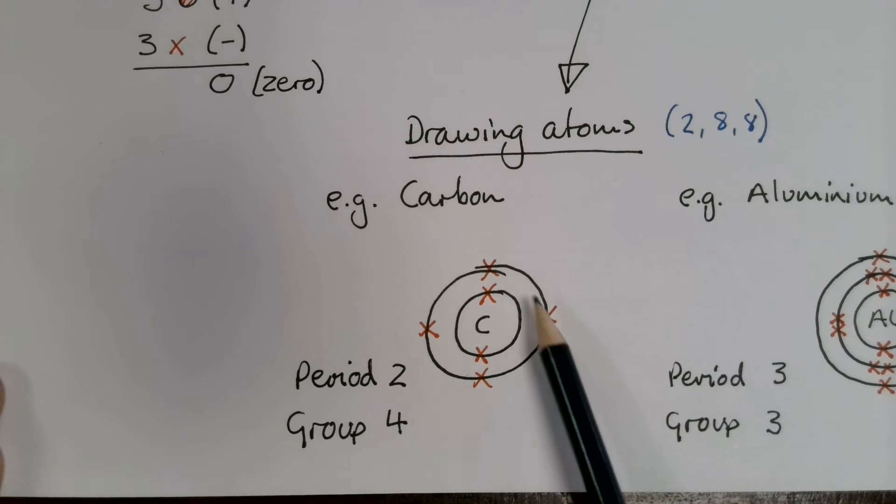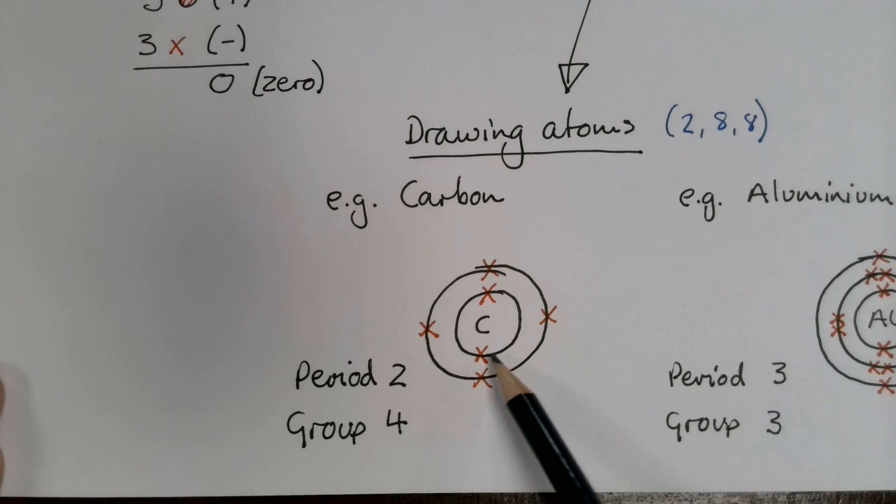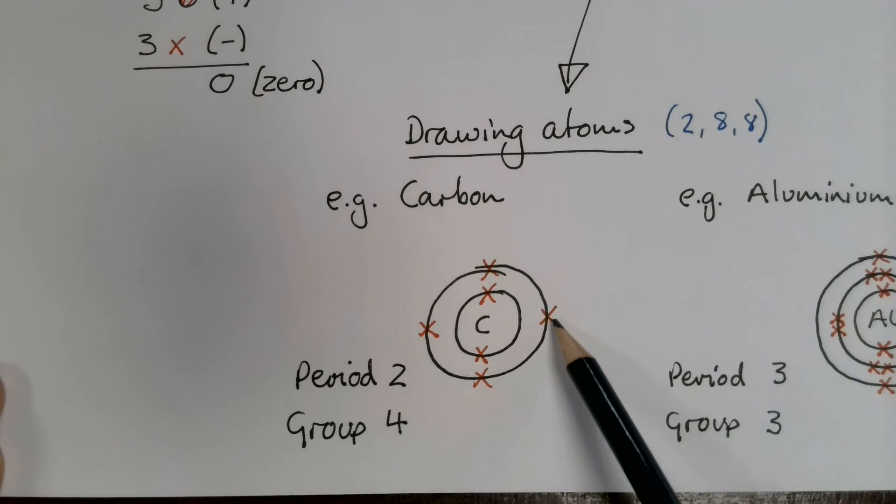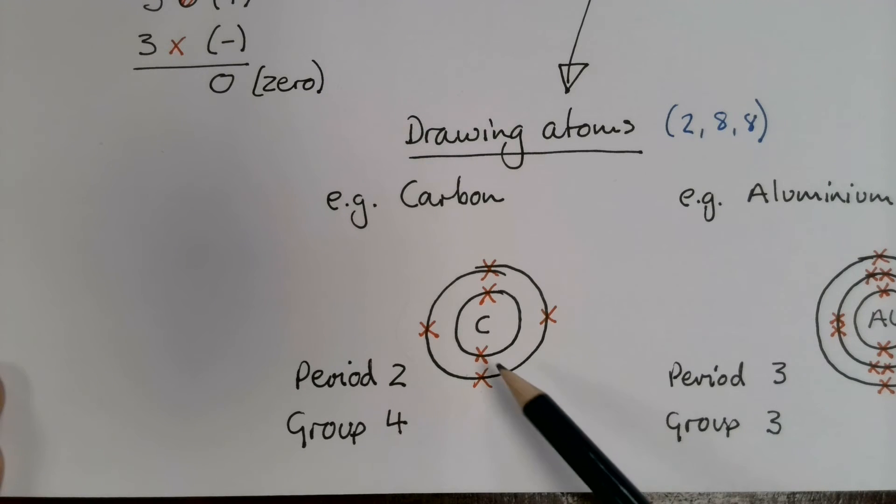And that tells me there are one, two, three, four valence electrons. The other thing I need to find out from the periodic table is what the proton number is. So this is the atomic number. And the atomic number for carbon is six. So if I've got my four in the outer shell, which I have to have because it's in group four, the other two must fit into the inner shell.